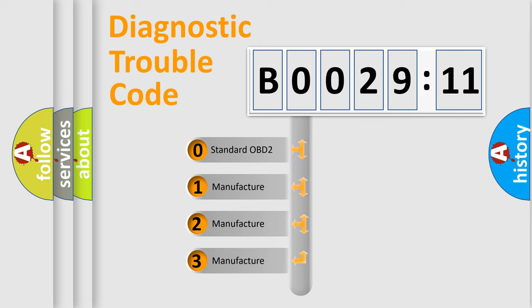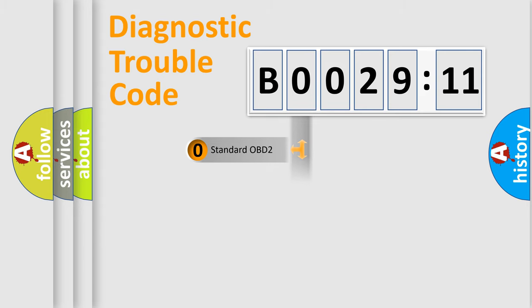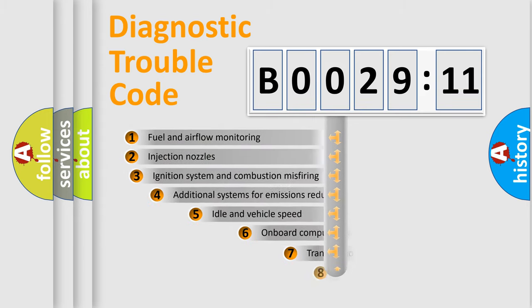If the second character is expressed as zero, it is a standardized error. In the case of numbers 1, 2, or 3, it is a more prestigious expression of the car-specific error.